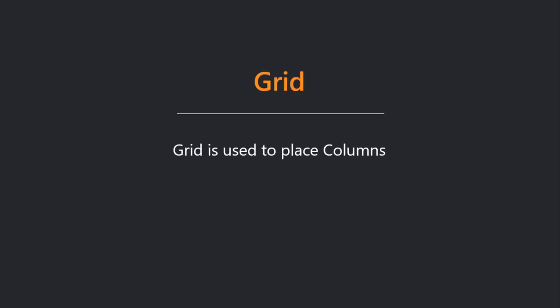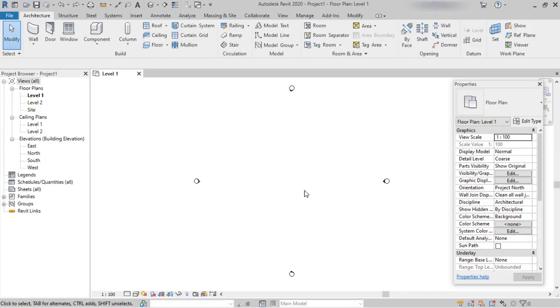Welcome. We'll learn about grids in Revit Architecture. Gridlines are finite planes which are used to add columns that can be stretched or arched.